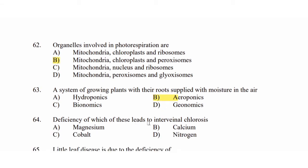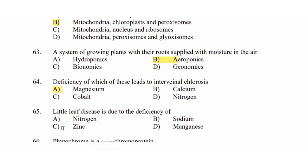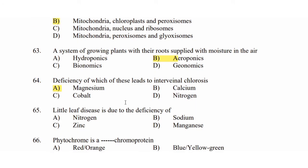Question 63: The deficiency of which of these leads to interveinal chlorosis? Option A: magnesium. Option B: calcium. Option C: cobalt. Option D: nitrogen. Interveinal chlorosis is due to the deficiency of Option A: nitrogen. Option B: sodium. Option C: synga. Option D: manganese.